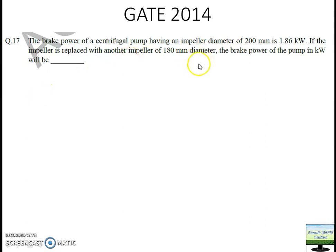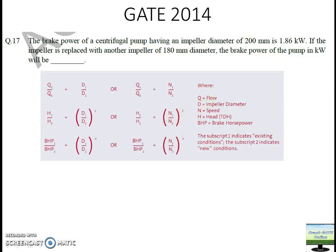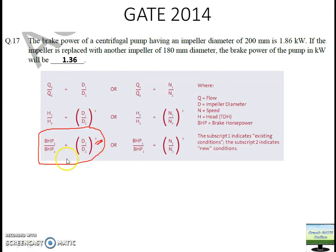In another question, power is changing with respect to diameter. You need to apply the relationship Power ∝ D³. For one known power and diameter, find the other power at a different diameter. The answer comes as 1.36. Solve this problem using this relationship only.